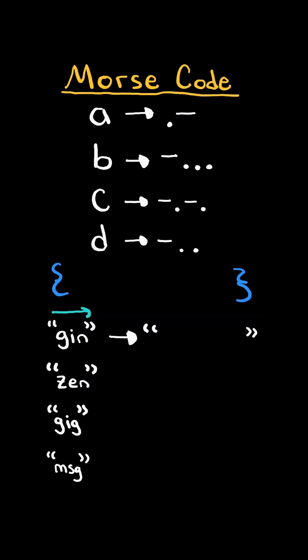We then iterate through the characters in the word and for each character we will look up its Morse code and add the Morse code to the string, continuing to the next character in the word.